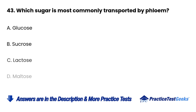Question 43: Which sugar is most commonly transported by phloem? a. Glucose. b. Sucrose. c. Lactose. d. Maltose.